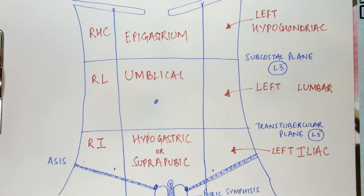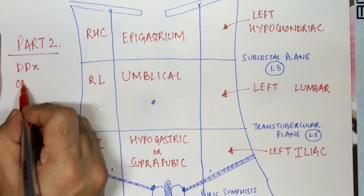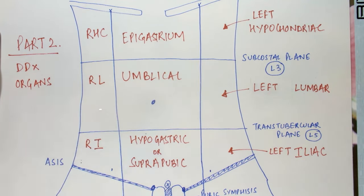This was a short description of how we divide the abdomen into nine regions and the names of those regions. Make sure to watch the second part of this video, in which we will discuss the various organs present in the respective regions and the differential diagnosis of pain referred to these regions. Please like, share, and subscribe if you want to see more videos on this channel. Thank you so much for watching.